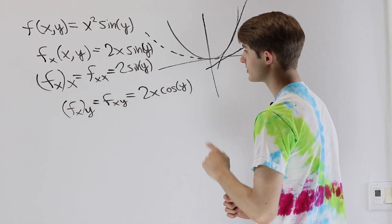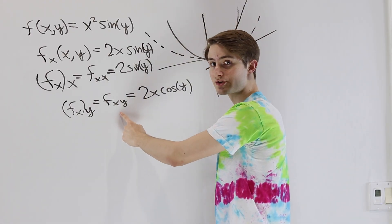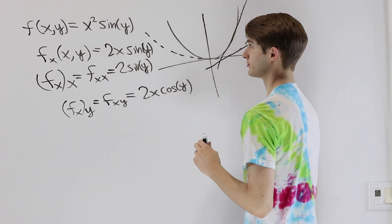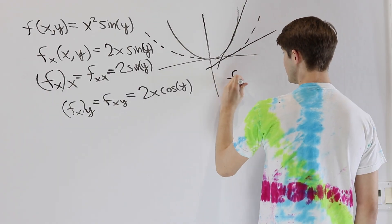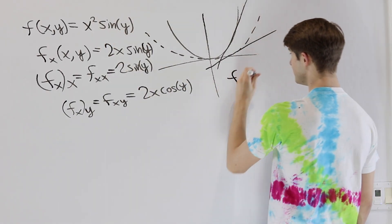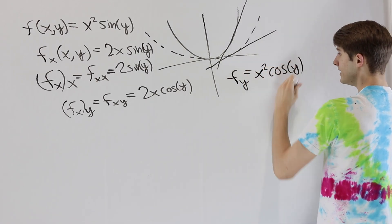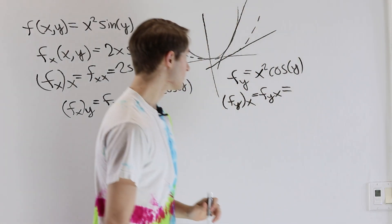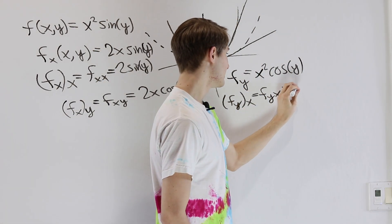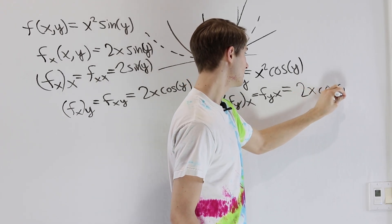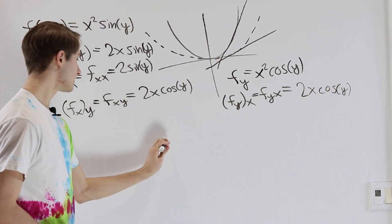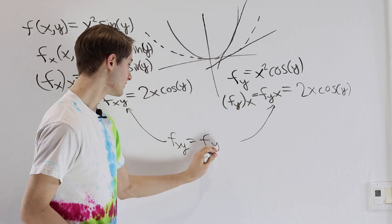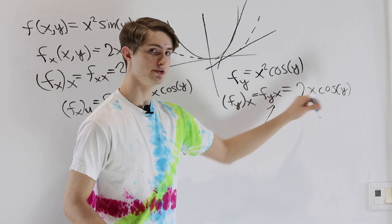One question you might ask is: what is the difference between f_xy and f_yx? Starting from f(x, y) = x² sin(y), f_y is the derivative with respect to y, which gives x² cos(y). Then taking the partial derivative with respect to x, treating y as a constant, gives 2x cos(y). So f_xy equals f_yx — both equal 2x cos(y).